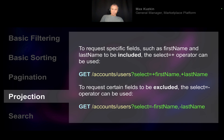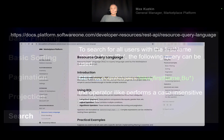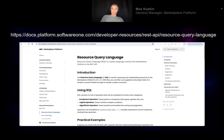You can also perform projections — add or remove optional attributes from the payload for optimization purposes. For example, you can add the representation of a linked object or property not included by default, or remove a property you don't need to optimize your script. You can also search by certain properties using the 'like' operator — for example, give me all users with a first name matching a certain pattern. There are many more operators than the ones shown here; the Resource Query Language of our platform is fully documented in our public documentation.